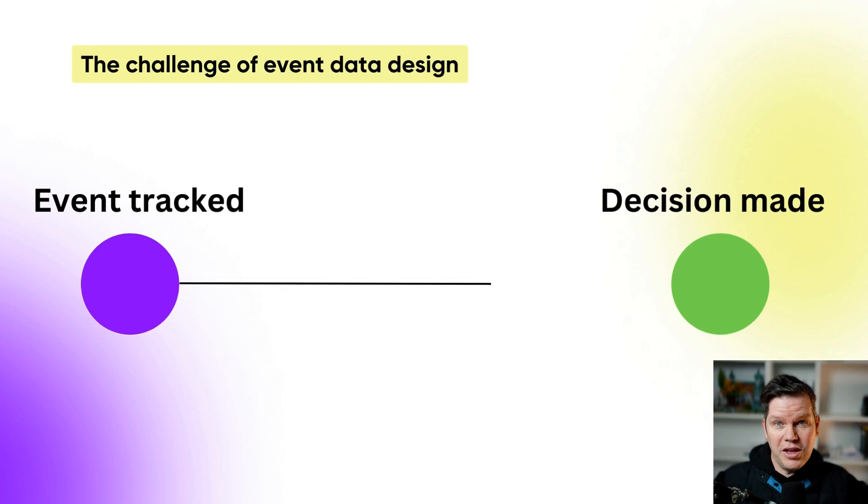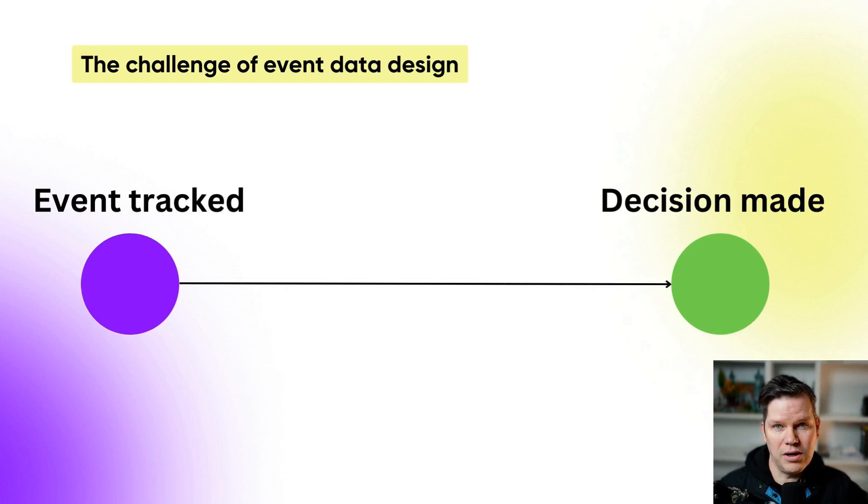These events that you track, you want to use to create really insightful analysis, automate things, or provide the best support for business teams as possible. You have this huge gap between what you track and what kind of insights you want to generate. A good event data design makes sure that you track the right things in the right shape, so that creating insights or dashboards becomes pretty easy.